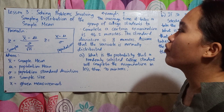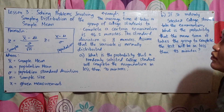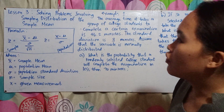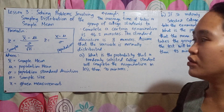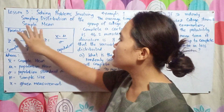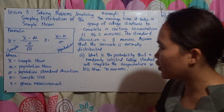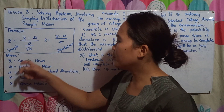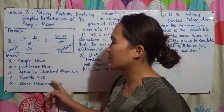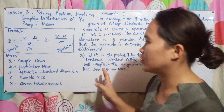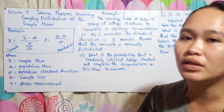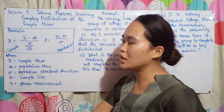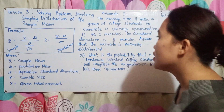Hello everyone. This time I'm going to discuss Lesson 3: solving problems involving the sampling distribution of the sample mean. We have two Z formulas to be used in this lesson. First is the Z formula for the sample and the Z formula for the population — covering sample mean, population mean, population standard deviation, sample size n, and X for the given measurement. The Z formula for the population was introduced in our previous discussions. The new one is the Z formula for the sample.